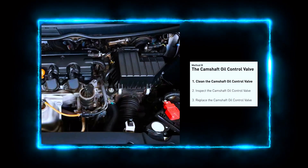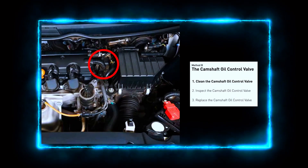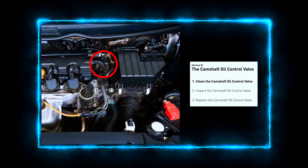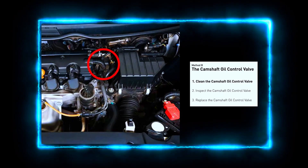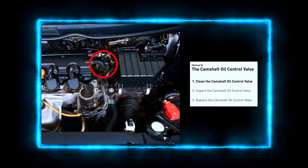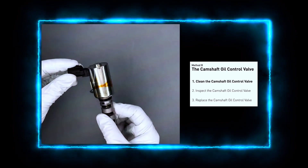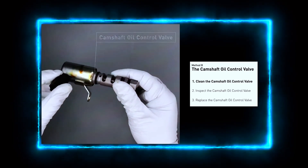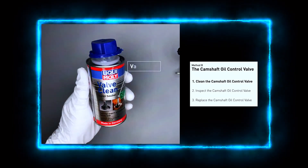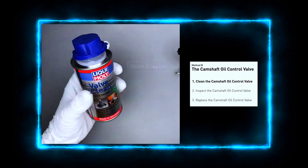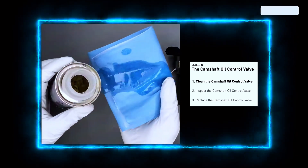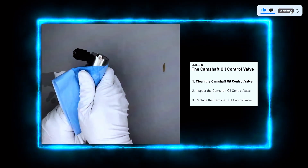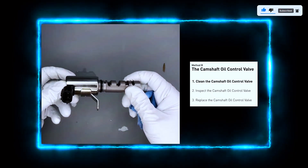Next, locate the camshaft oil control valve. Depending on your vehicle, it's usually mounted on the cylinder head near the camshaft — you'll typically find it bolted to the engine block with an electrical connector attached. Clean the oil control valve using brake cleaner or electrical contact cleaner spray, cleaning the valve thoroughly to remove any dirt or sludge buildup. Be sure to clean the valve's filter and any passages, then wipe it down with a clean cloth and let it air dry for a few minutes.